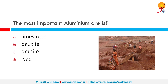Which is the most important aluminium ore? The correct answer is bauxite. The total reserves of bauxite in India are estimated at about 2,500 million tonnes, which is about 1% of the world's total reserves. The Indian reserves of bauxite are the 5th largest in the world after Guinea, Australia, Brazil, and Vietnam. More than half of India's bauxite reserves are in Odisha and Andhra Pradesh states.